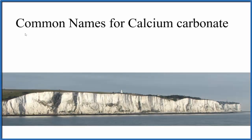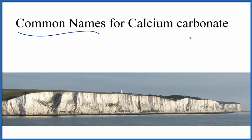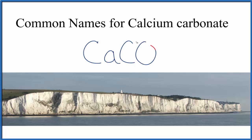In this video we'll look at some of the common names for calcium carbonate. This is the chemical name, and if we wanted to write the formula for calcium carbonate: calcium is Ca, and carbonate is CO3. So we have the chemical name calcium carbonate and the chemical formula CaCO3.